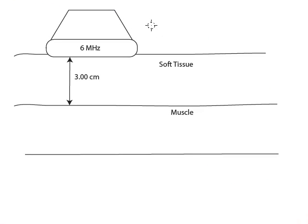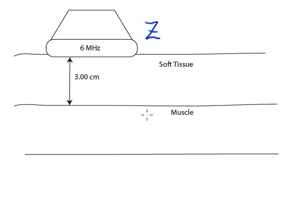In a previous video I looked at something called the acoustic impedance of a material, which I gave the letter Z. That's going to be related to the reflection that occurs at an interface. If the acoustic impedance between two tissues is identical, there will be no reflection at that interface. If there's a difference in acoustic impedance between the two materials, then a reflection will occur.